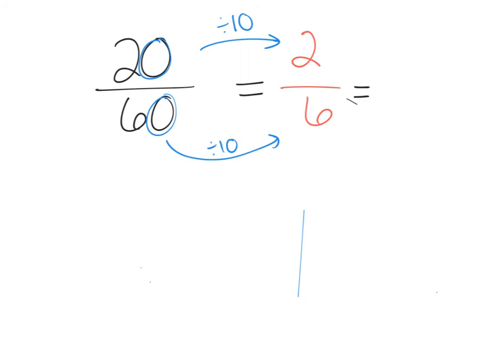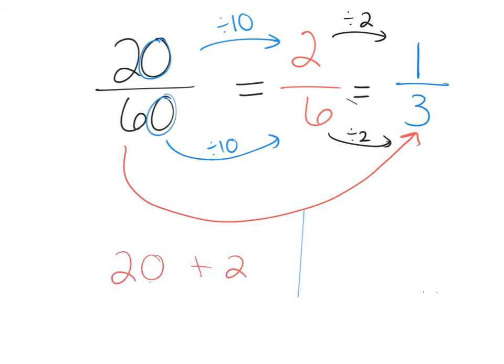Well, you can think, oh, well, 2 can go into them. Divide this by 2. Now we have 1, but we also have to divide this 6 by 2, which gives me 3. Wow. So 20 sixtieths is the same thing as 1 third. And if you think about that, 20 plus 20 plus 20, there's 3 of them to get to 60. So 1 of them is 1 third of 60.